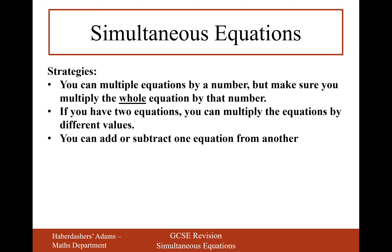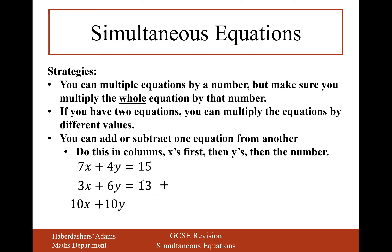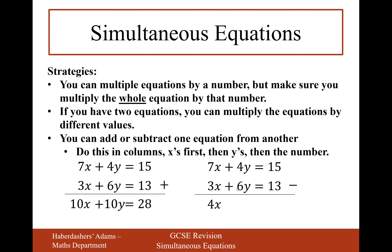You can also add or subtract one equation from another — do this in columns: x's first, then y's, then the numbers. For example, taking 7x plus 4y equals 15 and 3x plus 6y equals 13: adding gives 10x plus 10y equals 28. Subtracting (top minus bottom) gives 7x minus 3x = 4x, 4y minus 6y = minus 2y, and 15 minus 13 = 2. So you can add and subtract equations from each other.